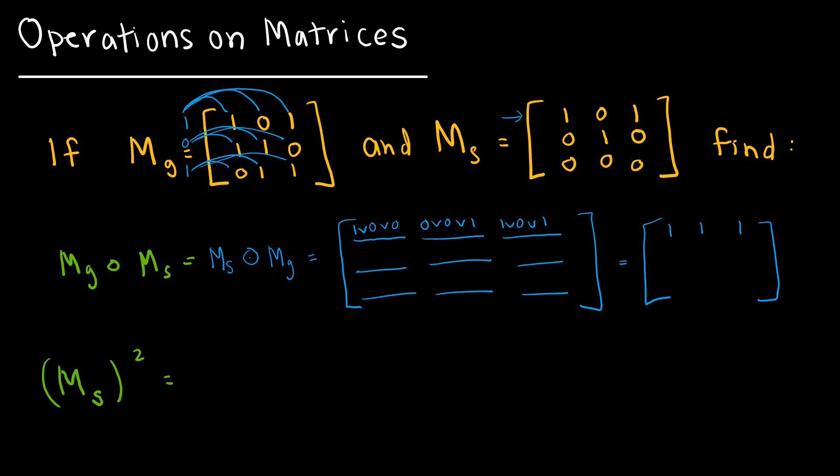Then I would just do the same thing. Now I'm going to use 0, 1, 0. I'm going to take 0 and 1 which is 0, 1 and 1 which is 1, and 0 and 0 which is 0.